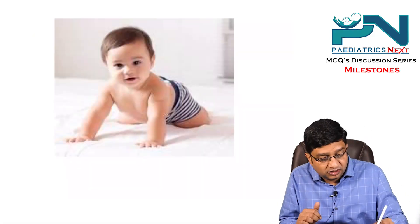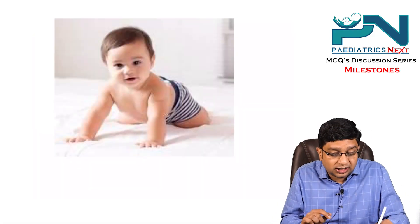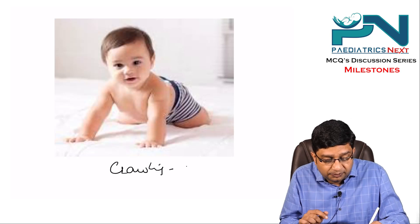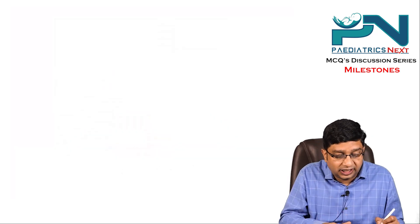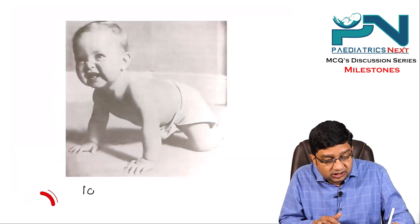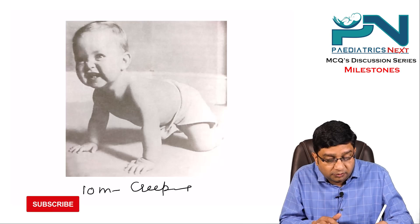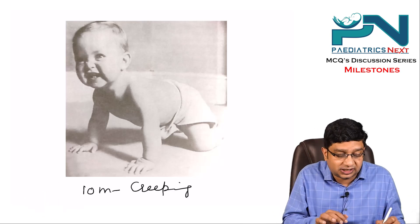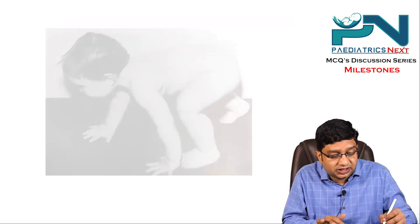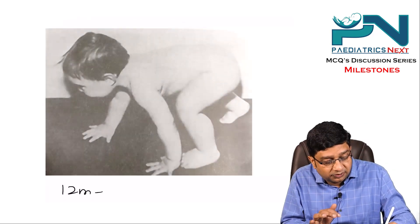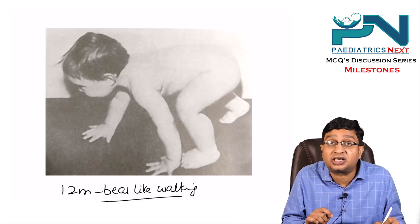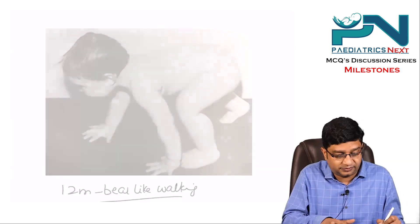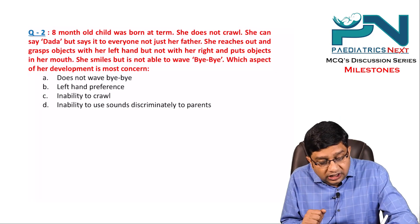The first picture shows a child crawling, which appears at 8 months — only the chest is lifted. At 10 months we have creeping, where both chest and abdomen are lifted and arms are extended. At 12 months we have bear-like walking, where the child walks on extended arms and extended legs.